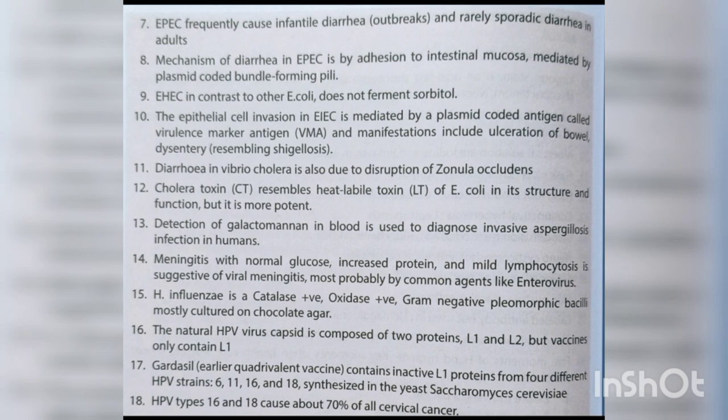Detection of galactomannan in blood is used to diagnose invasive Aspergillosis infection in humans. Meningitis with normal glucose, increased protein and mild lymphocytosis is suggestive of viral meningitis, most probably by common agents like enterovirus.